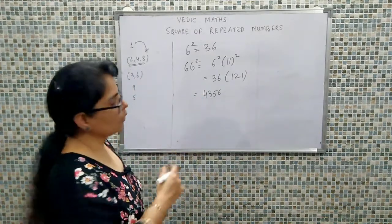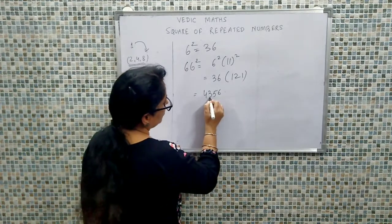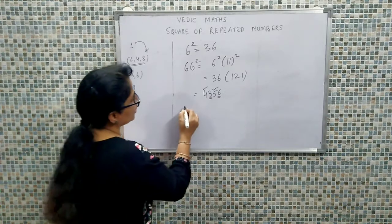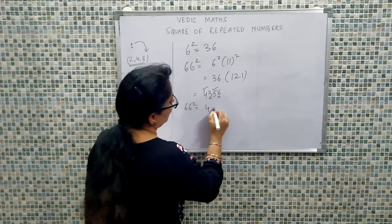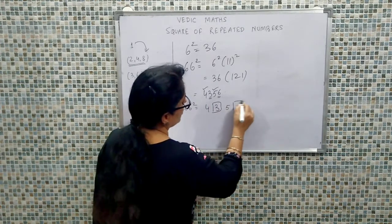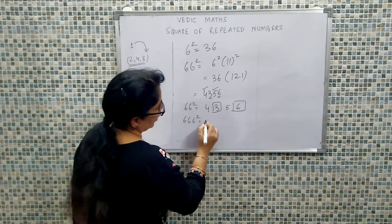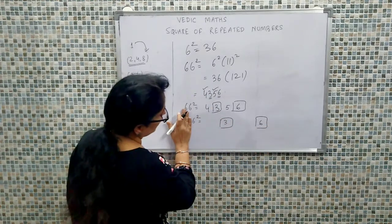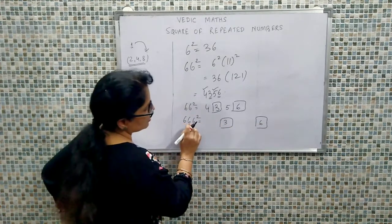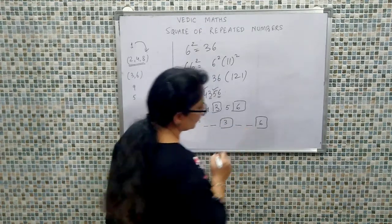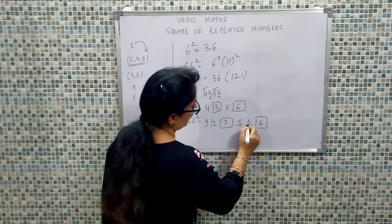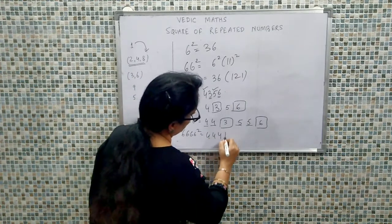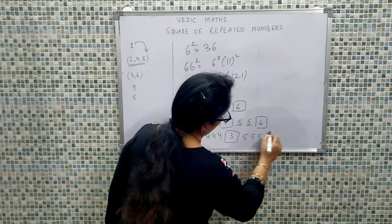When you square 6666, you find a particular pattern: 3 and 6 are fixed, and 4 and 5 are variable. 66 squared is 4356 — these two values 3 and 6 are static. Now for 666 squared, we fixed 36 at the ends, and we have 3 remaining sixes — so we write three 4s and three 5s in between, giving the pattern: 3, 4, 4, 4, 5, 5, 5, 6.